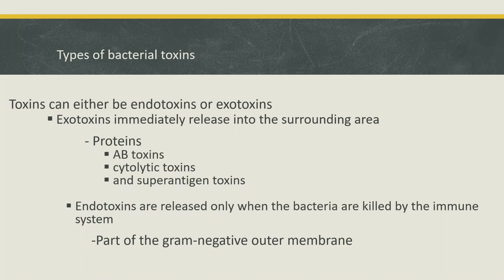AB toxins are considered the most potent exotoxins because they interfere with the function of the host cell. Cytolytic toxins cause damage or death of cells by cytolysis, which is the splitting of the cells. Superantigen toxins cause a massive immune response in order to destroy host cells.